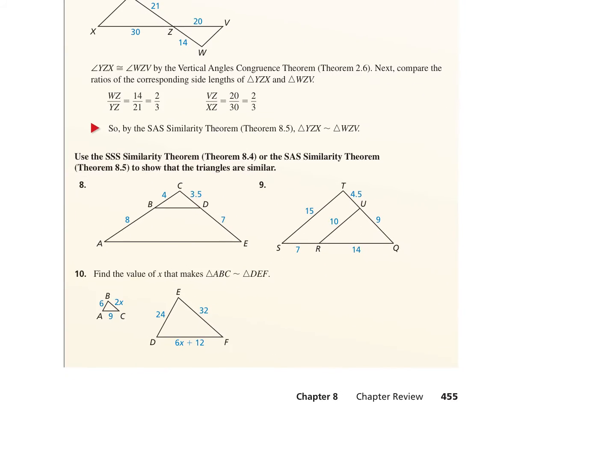For number 9, it says to use either SSS or SAS to show that the two triangles are similar. For SSS — side-side-side — I'd have to show all three corresponding sides are proportional. For SAS — side-angle-side — I'd have to show one congruent included angle and the two proportional sides that form that included angle.